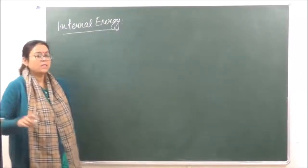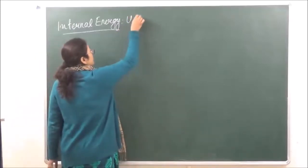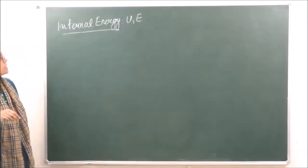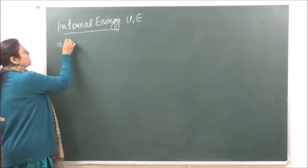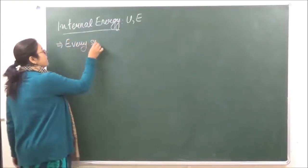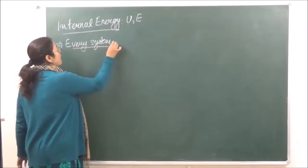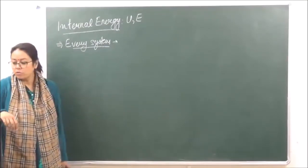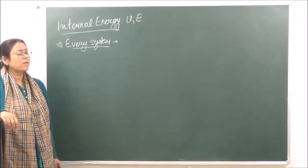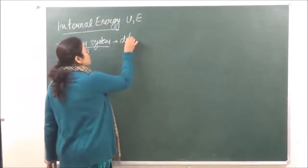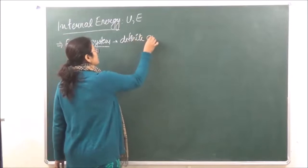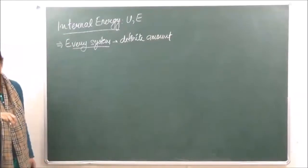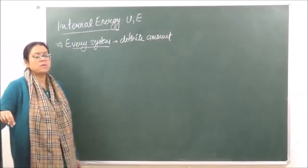Internal energy — in some books it is denoted by U, in some books it is denoted by E. What is internal energy? We say that every system under investigation has some amount of energy which is possessed by itself. So that energy — every system has its own definite amount of energy. It is the definite amount of energy which is associated with each system. Now the exact value of this energy we cannot calculate.